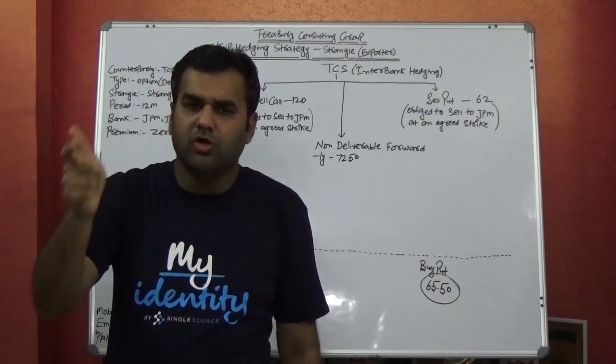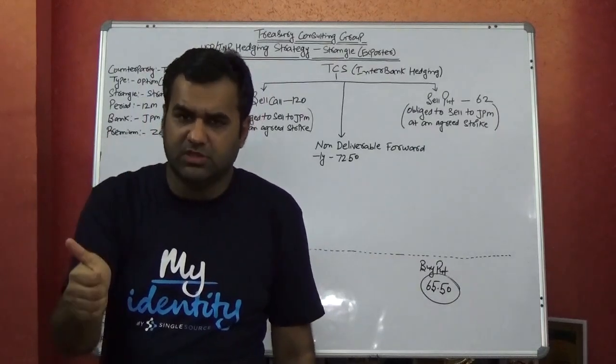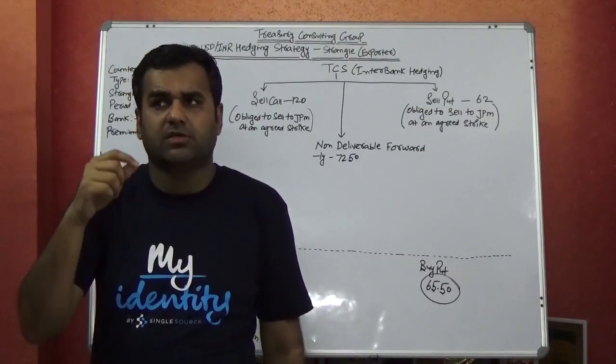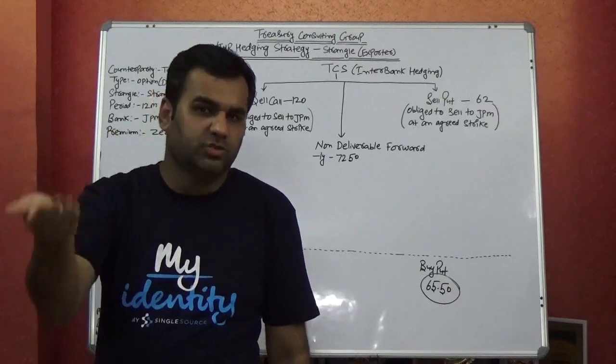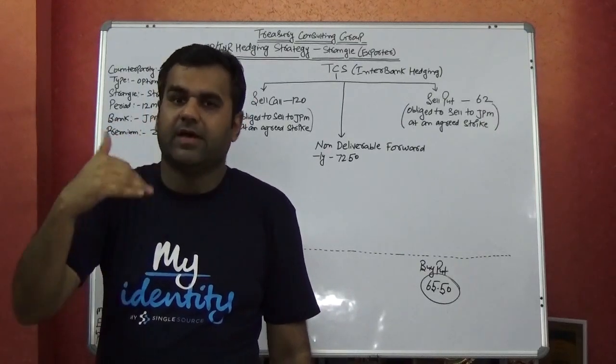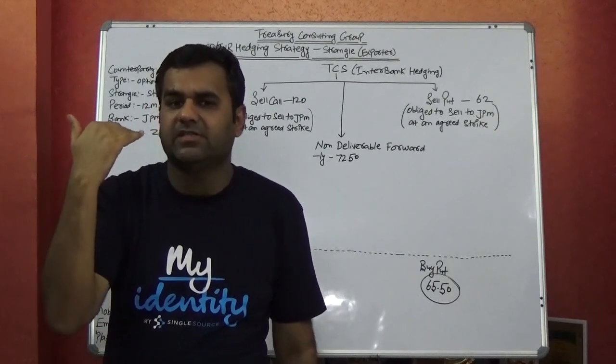So the settlement would happen at 21st March 2020. But basically, sorry—the Tokyo cut will be decided 21st March 2020, but the settlement would happen at 20th March 2020, which is 2 working days before.